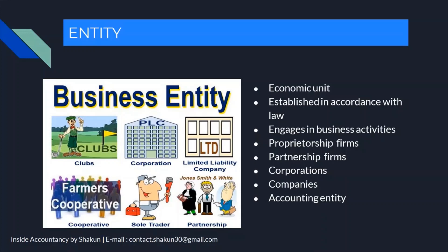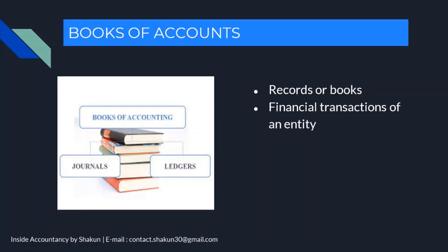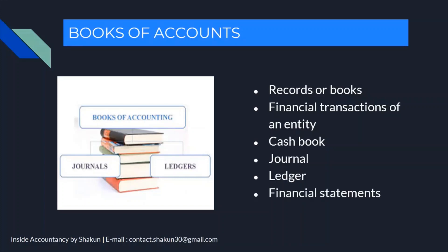Moving on to Books of Accounts. Books of accounts are the records or books in which financial transactions of an entity are recorded and maintained. They show the financial transactions of a business entity. The various books of accounts include the cash book, journal, ledger, and financial statements. The basic book of original entry is the journal, and thereafter we prepare the ledger.